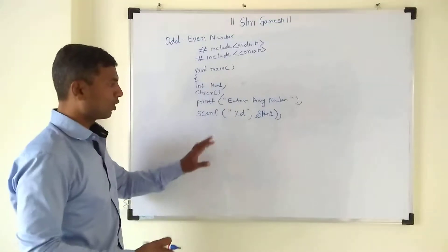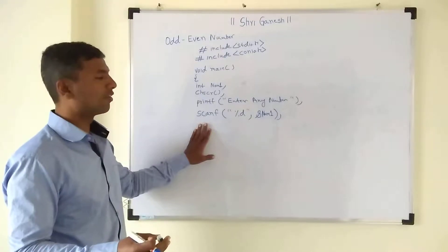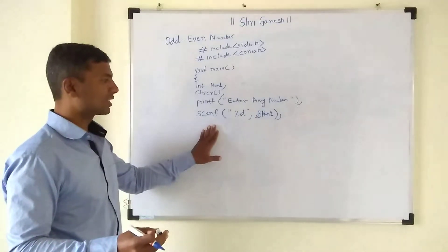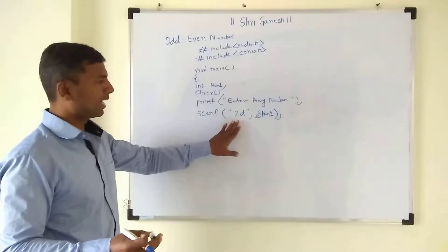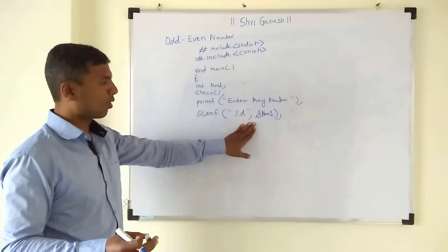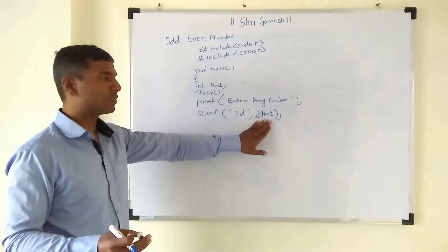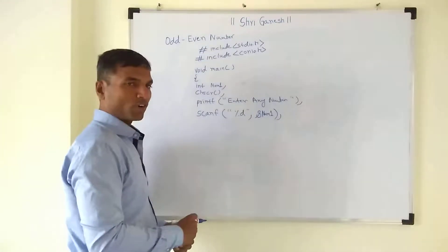I will repeat again. If you want to take a number from user and store it into a particular variable, you have to use the scanf function. Syntax for that: bracket, in double code, format specifier percentage d, then comma, then address of num1. So this way you can take a number from user. Now the value is stored in num1.